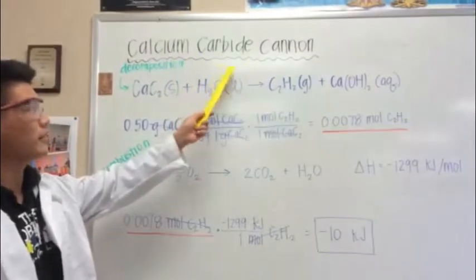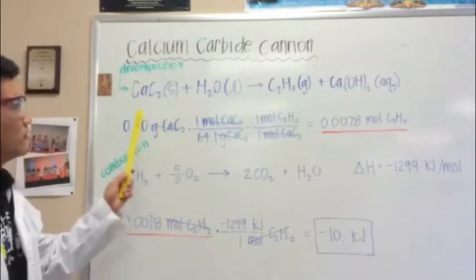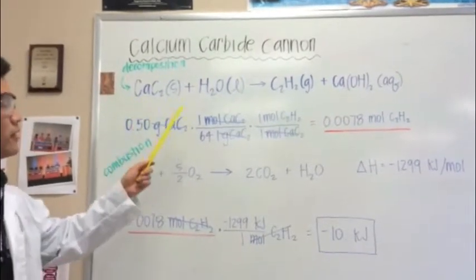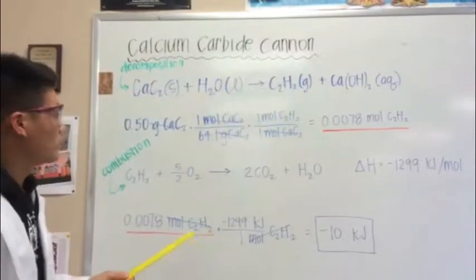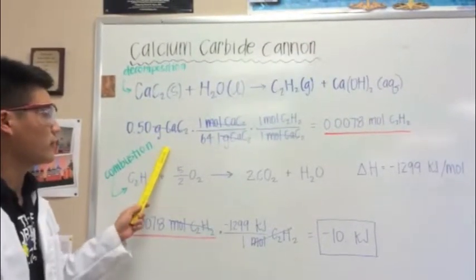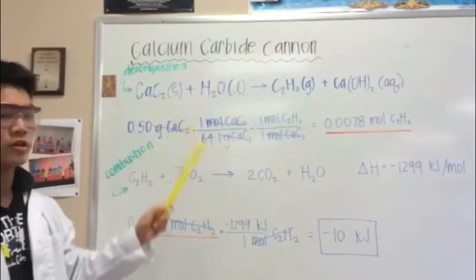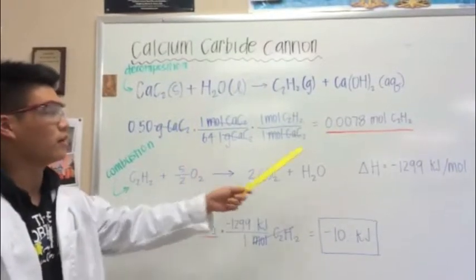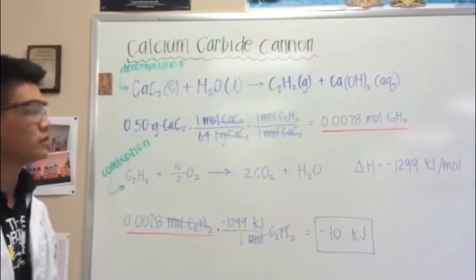For the calcium carbide cannon, we first decomposed calcium carbide in water, represented by this equation. We started with 0.5 grams of calcium carbide and used stoichiometry to find that 0.0078 moles of C2H2 was formed.